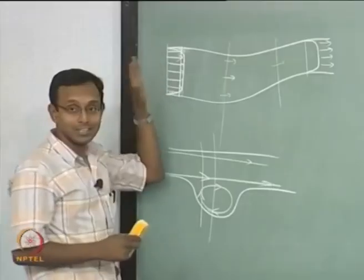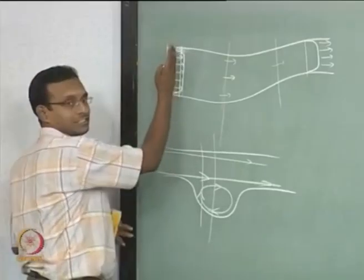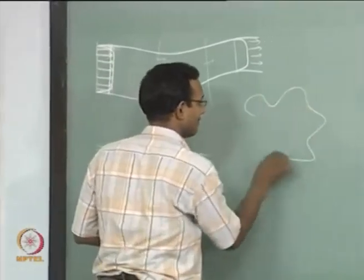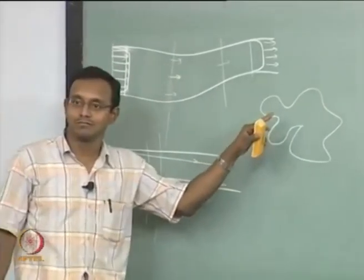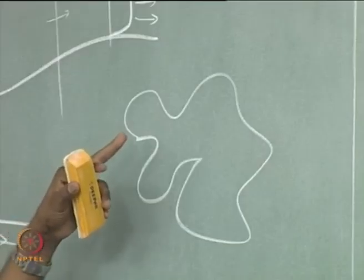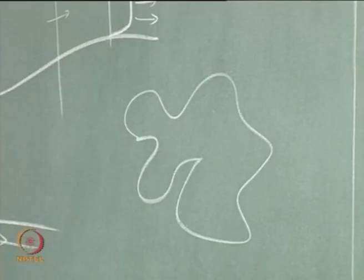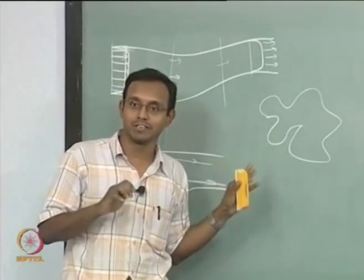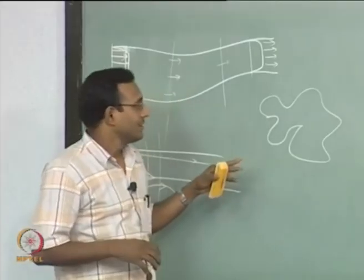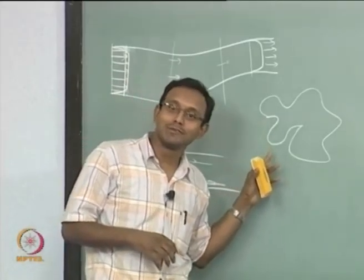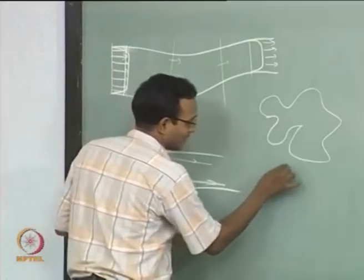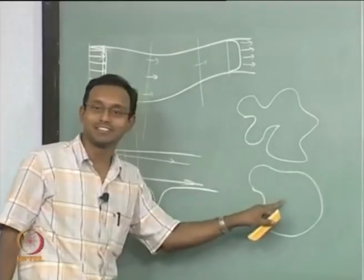I did not specify what the cross section shape looks like — it may be however crazy it feels like. As long as the flow is going only perpendicular to that area and there is no other flow, that is my current assumption. Typically if there is a more complex flow with recirculation, nobody will want to use the 1D assumption. They will use it only for something less complex like a gentle duct.